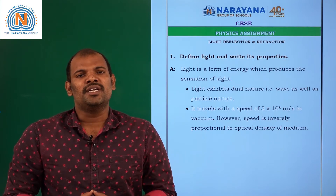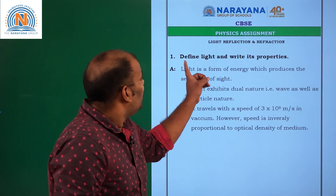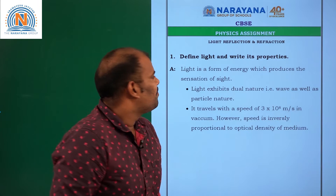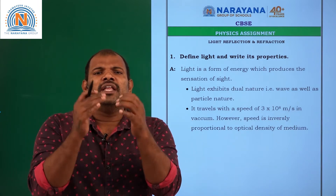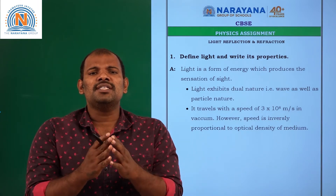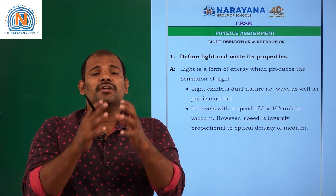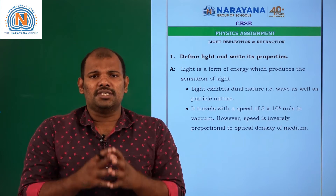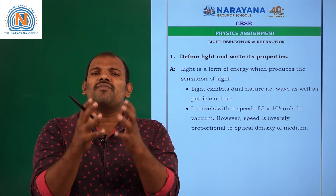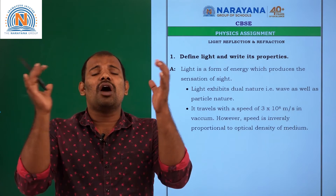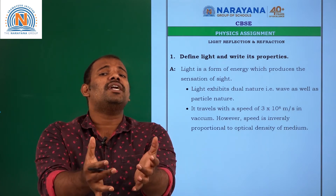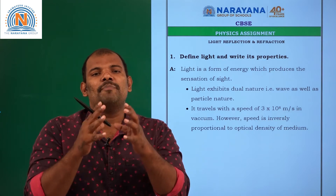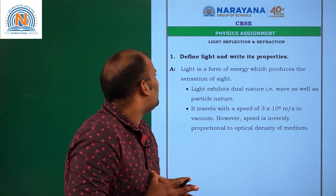Let us see question number 1: Define light and write its properties. Light is a form of energy which gives us a sense of vision. Because of light we are able to see objects. Light rays come from the source of light, fall on the object, and the reflected ray reaches your eye — then you are able to see the object.